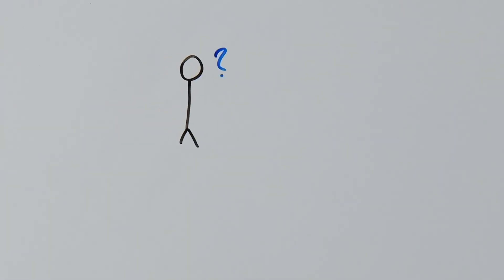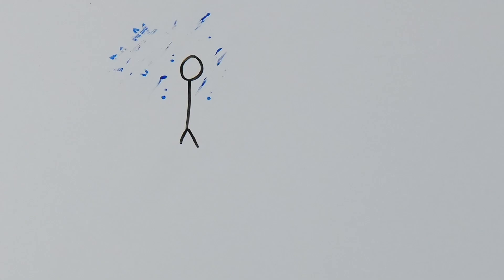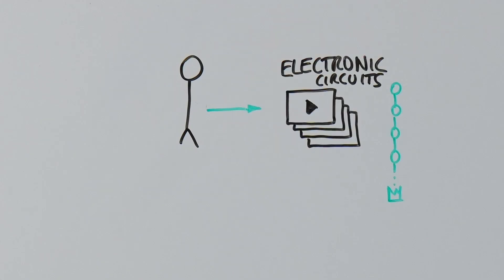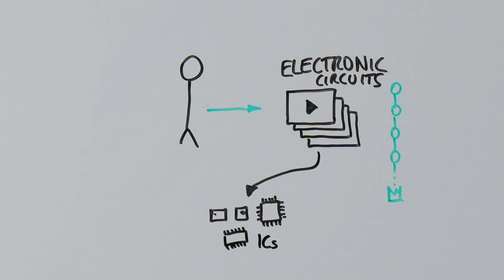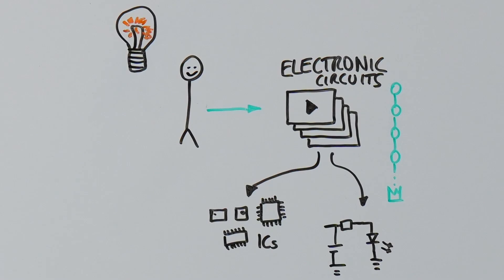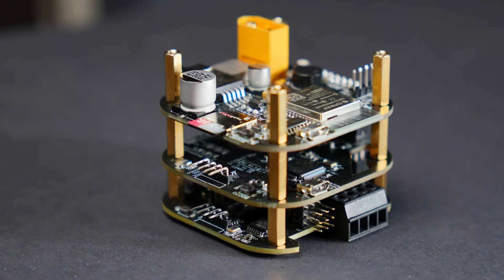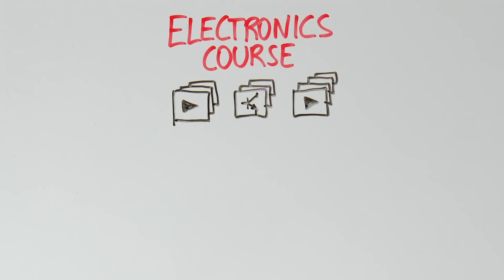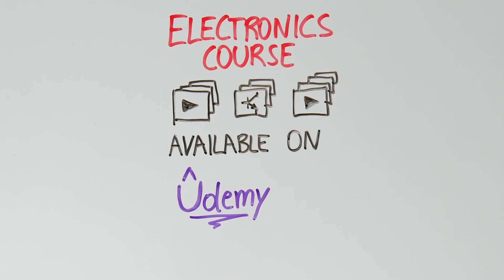If this overview seemed complex and you only grasped a portion of what was covered, don't worry. We'll dive deeper into these concepts in the next section on electronic circuits. There you'll learn about essential integrated circuits frequently used in our designs and how to arrange components to create a functional flight computer like this one. The full course is available on Udemy.